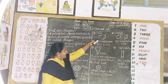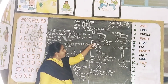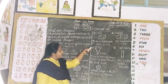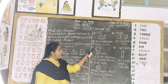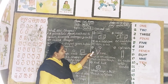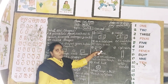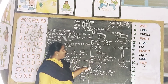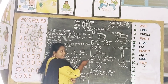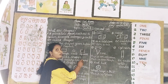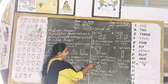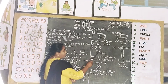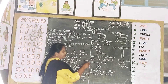C-U-B-E. It has a solid figure. Example: a dice, a box. What is this? This is an ice cream. What is this? This is an ice cream. I-C-E-C-R-E-A-M. Ice cream. This is in cone shape.